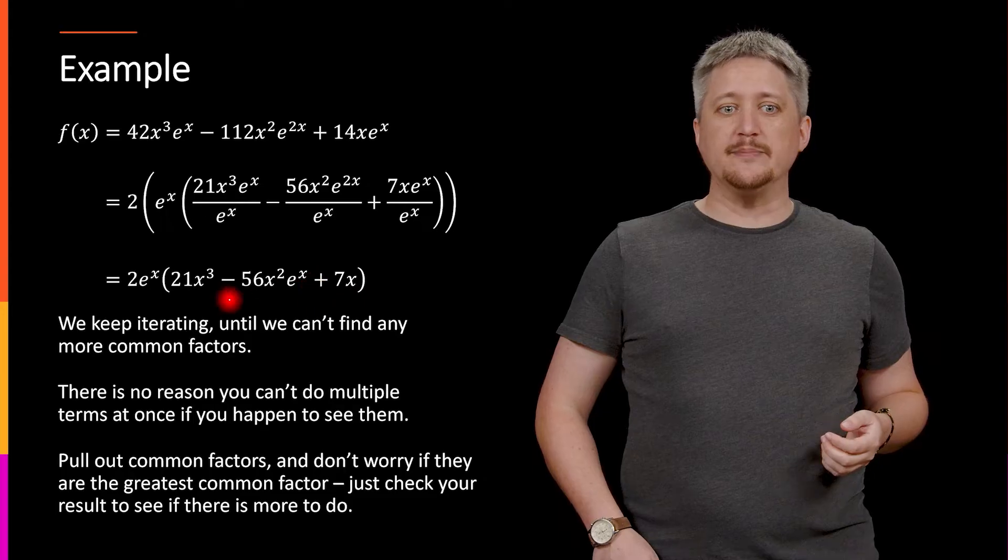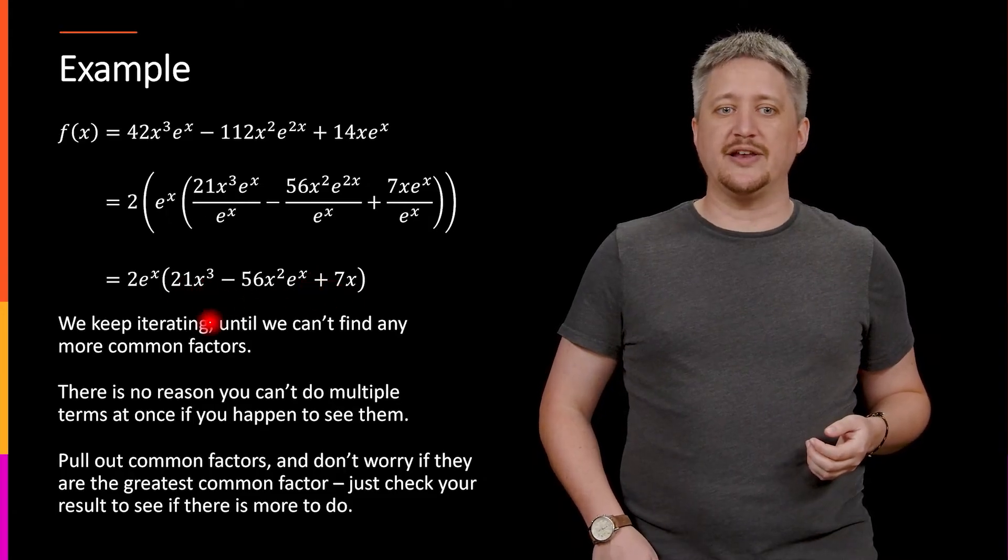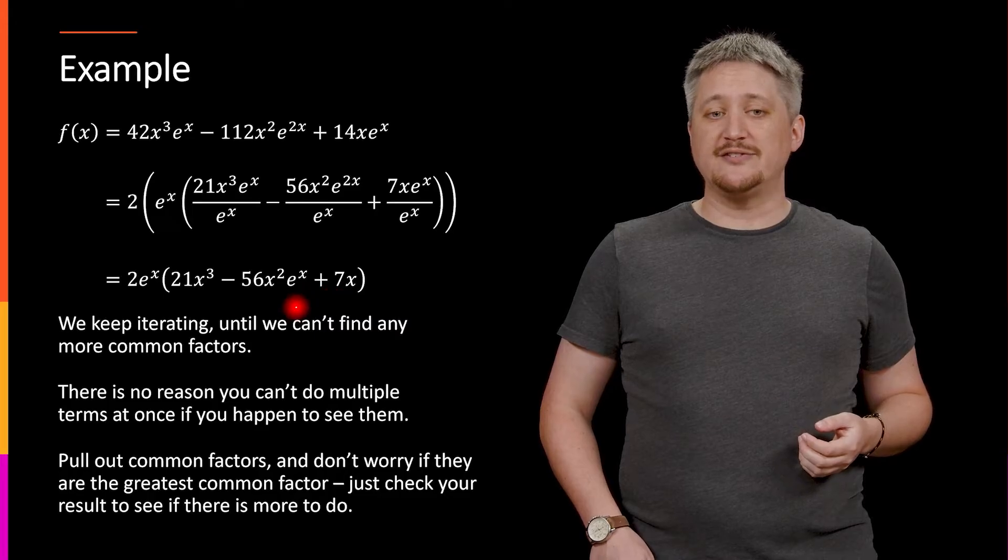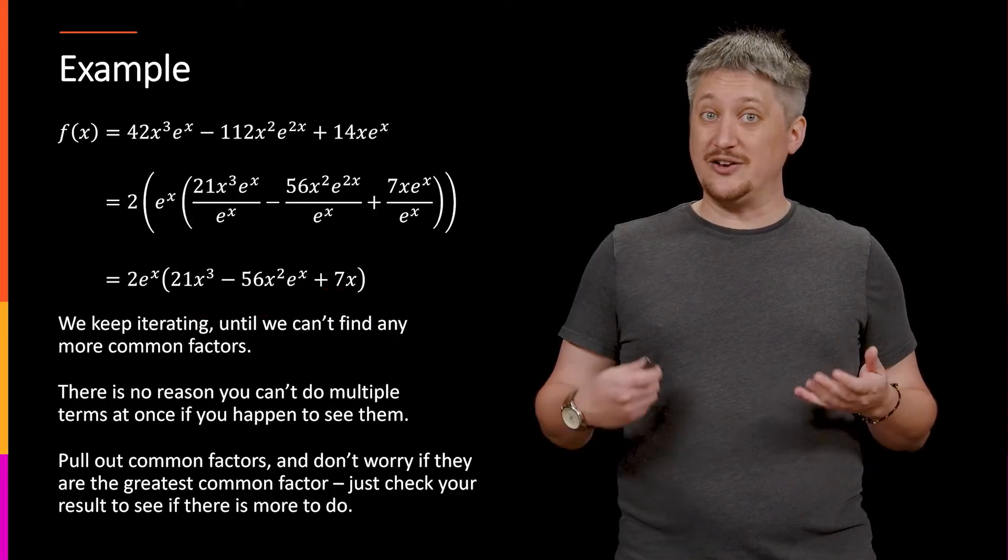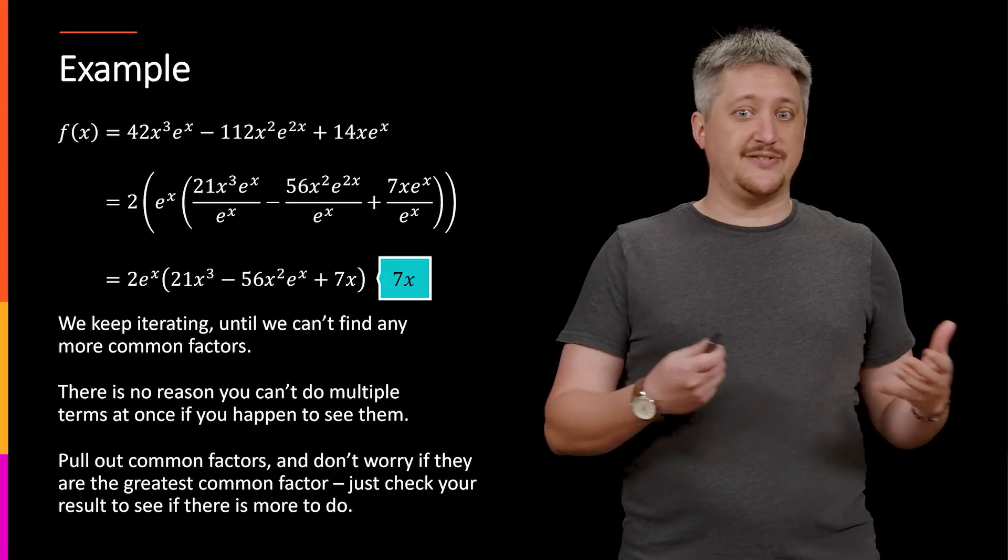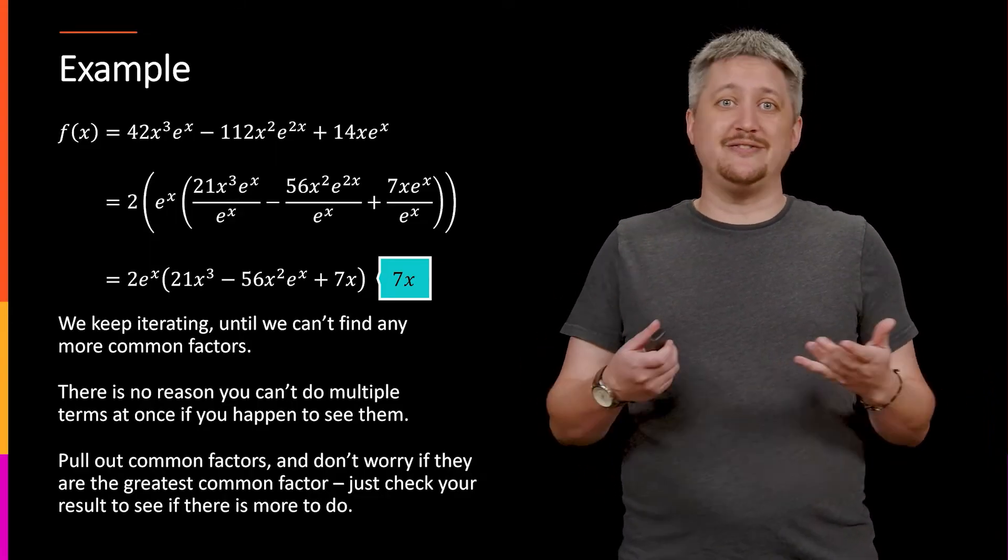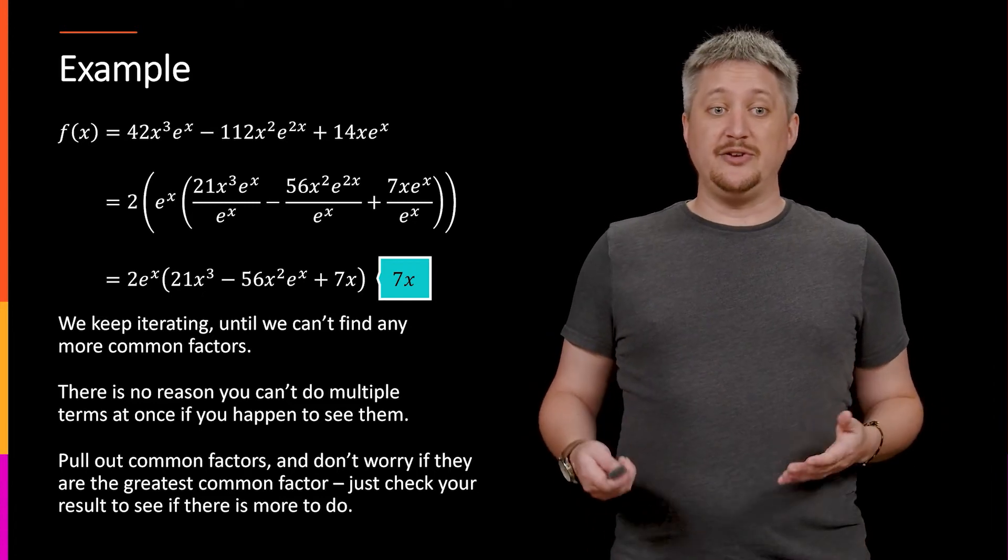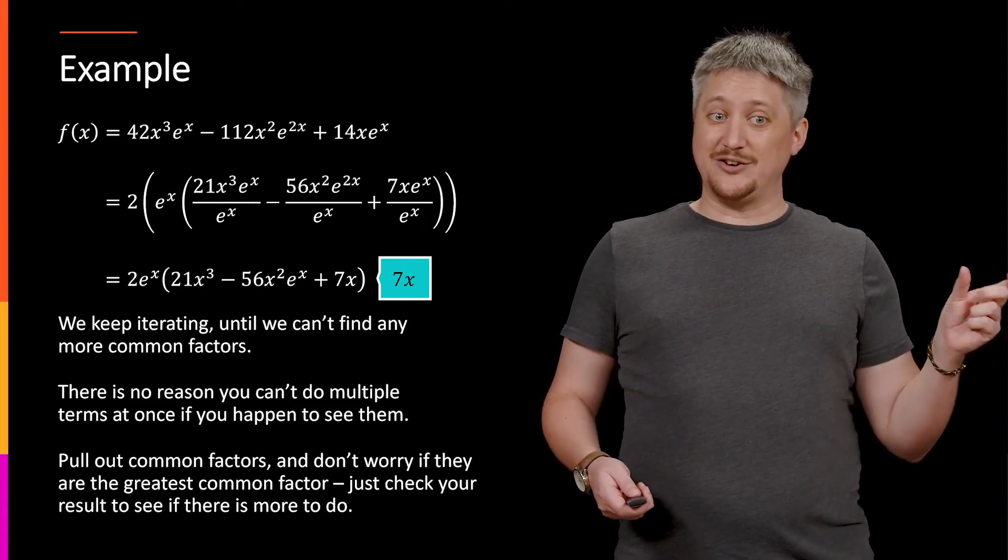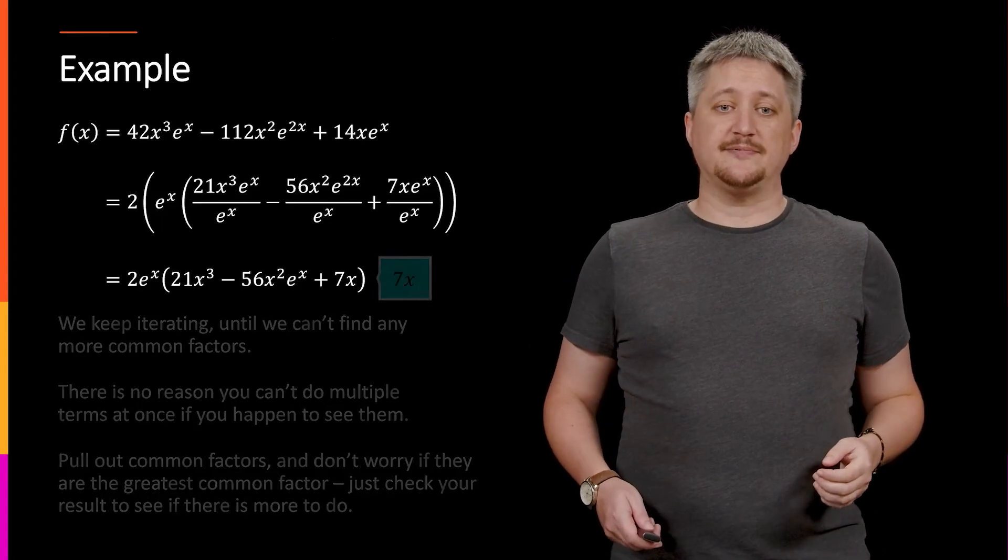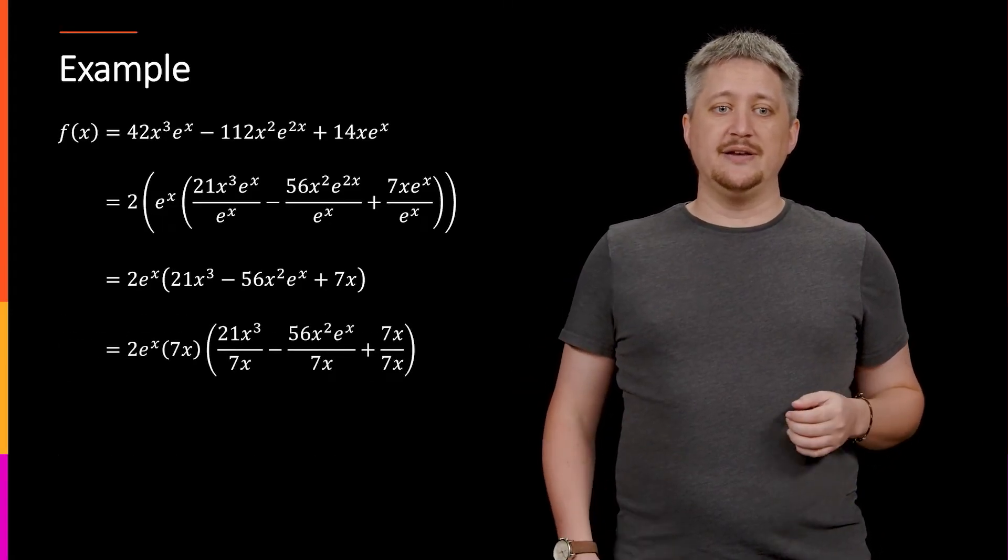So looking at our again leftover bit, this inside bit, I might notice that I have an x in each of these. I might even notice that I have a 7 that divides each of these. So if I notice both of those I could pull out 7x. I don't have to do them separately, I can do them together. If I wanted to do them separately that is also fine. Same deal, I'm going to pull it out, tack it on with the leading bit and divide it out of each of the pieces.